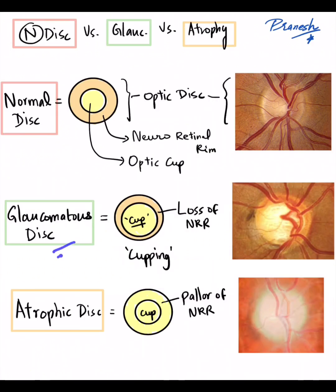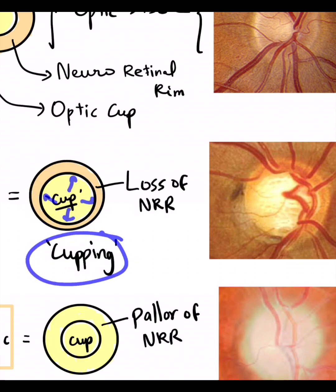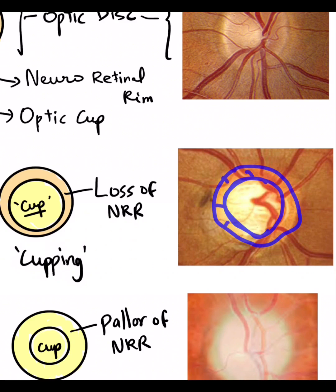In a glaucomatous disc, there is going to be a loss of neuroretinal rim, resulting in a recession or thinning of the NRR, as a result of which the cup is going to increase in its size — what we call cupping. As you can see in this picture, there is an enlargement of the cup because of the thinning of the neuroretinal rim.